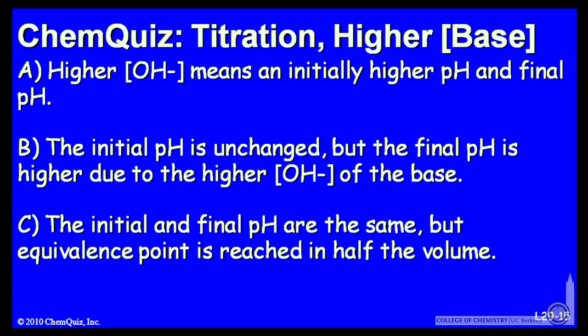Let's look at a possible explanation for each answer. A: higher OH minus concentration means an initially higher pH and final pH. B: the initial pH is unchanged, but the final pH is higher due to the higher OH concentration of the base.